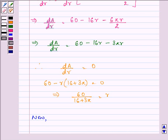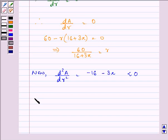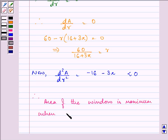Now, let us find out the second derivative. It will be equal to minus 16 minus 3 pi, which is, obviously, less than 0. So, therefore, we can say that, area of the window is maximum when r is equal to 60 upon 16 plus 3 pi.